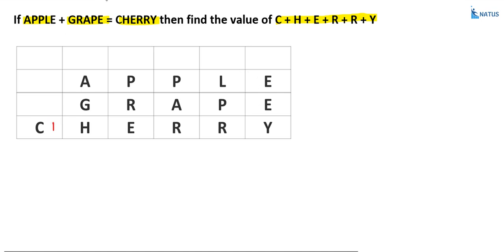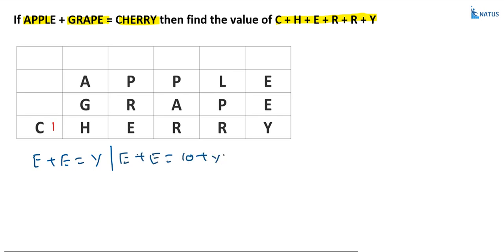Now, come to the remaining values. Here, suppose if you observe the first column: E plus E is equal to Y, or E plus E is equal to 10 plus Y.